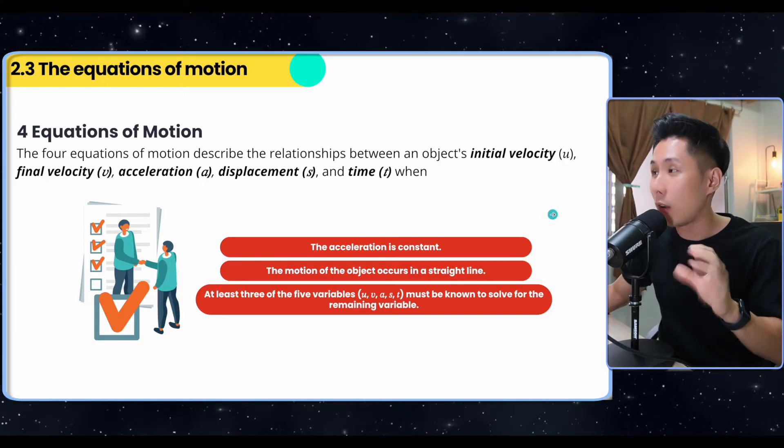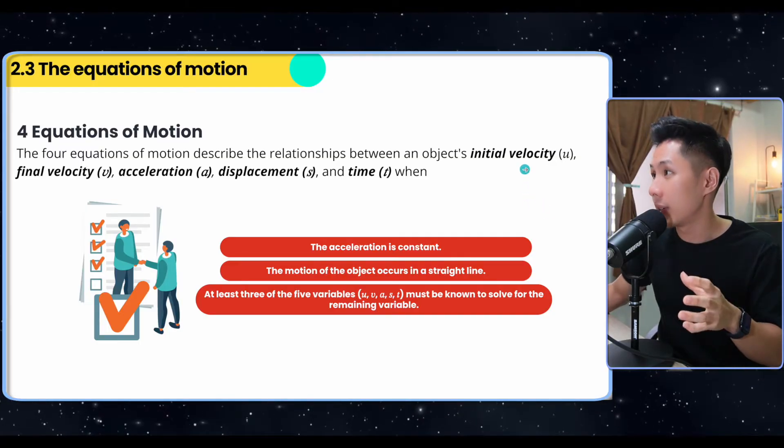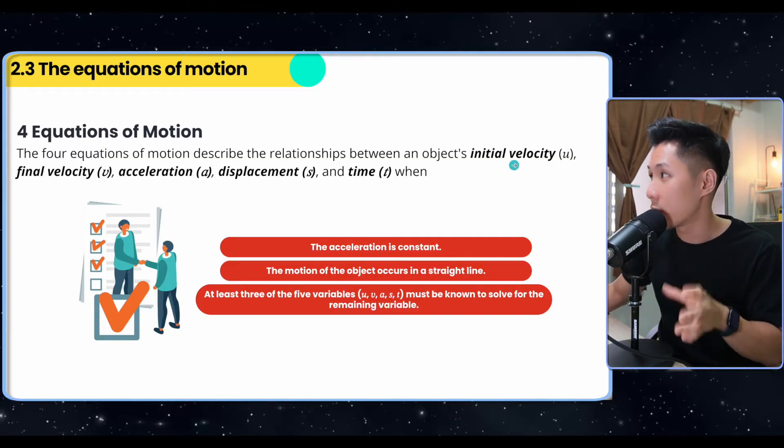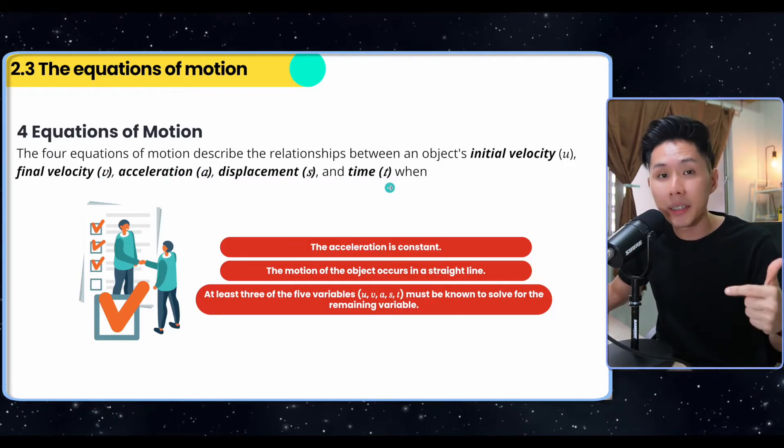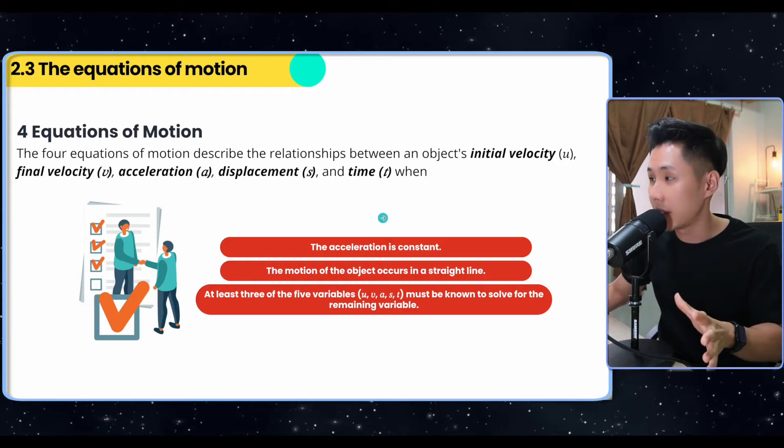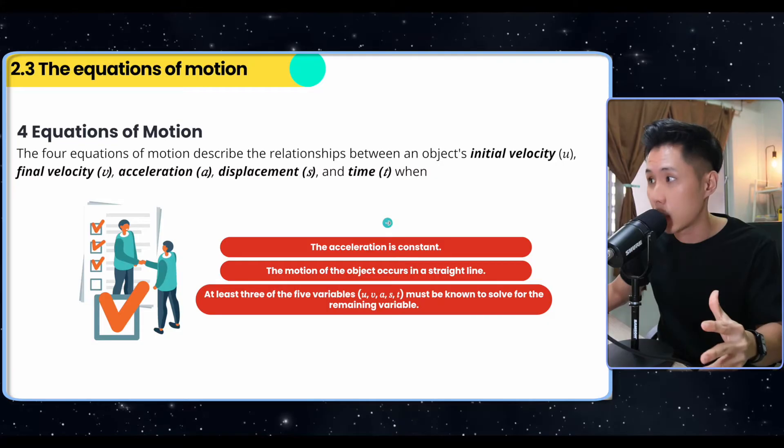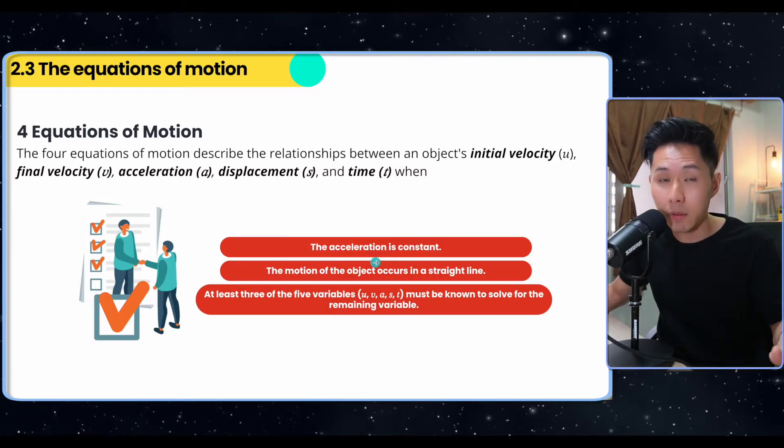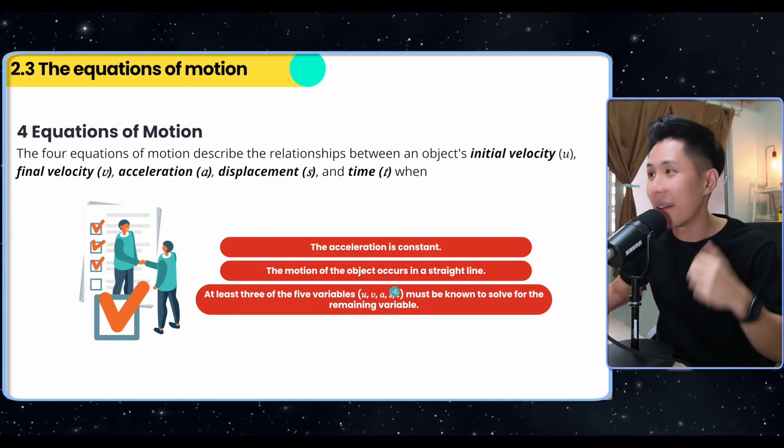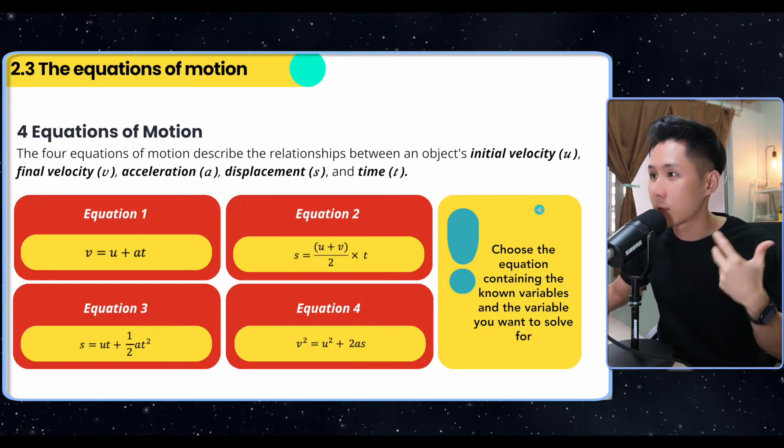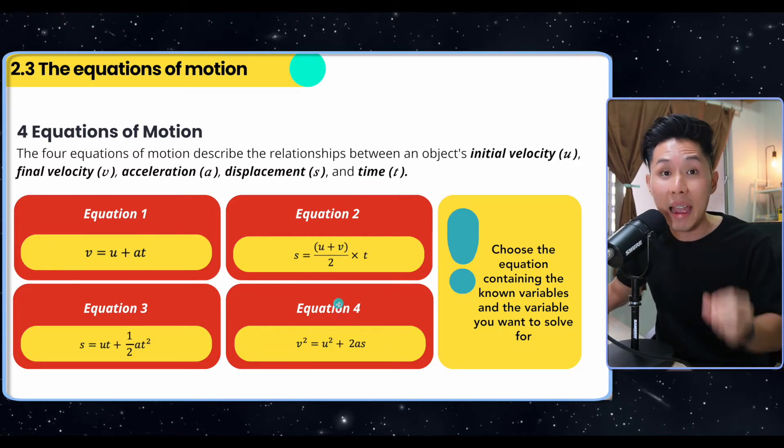Now, let's look into the very important part of this chapter, the equations of motion. I'll be teaching you four equations to help you solve different problems. And these four equations have the following quantities: initial velocity u, final velocity v, acceleration a, displacement s, and time t. And to apply this formula, these are some criterias that you need to know. The acceleration throughout the motion must be constant, must not change. And the motion of the object occurs in a straight line rather than a curved line. And at least three of the five variables must be known. Now, it's pretty hard to imagine. So let's try to solve some questions with this equation.